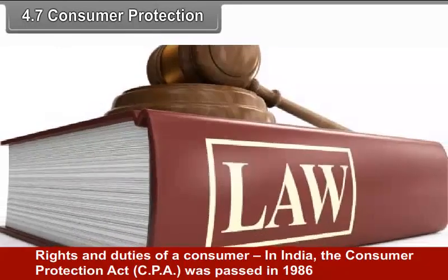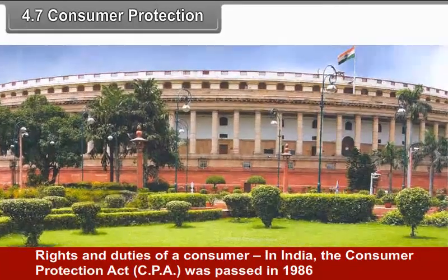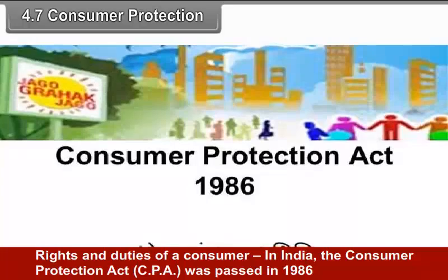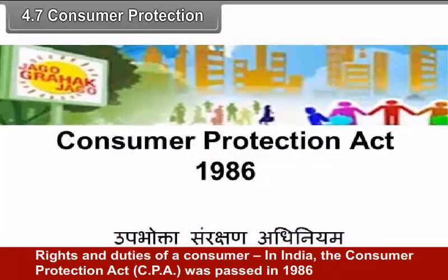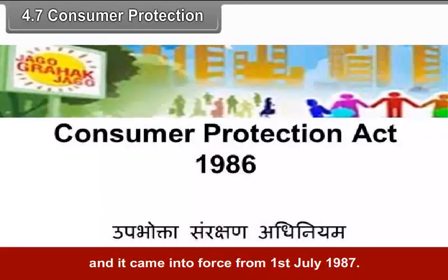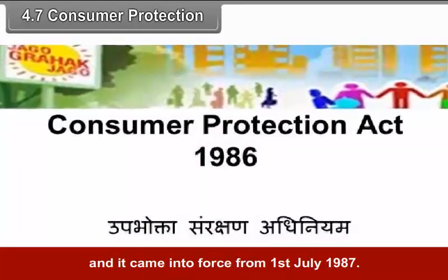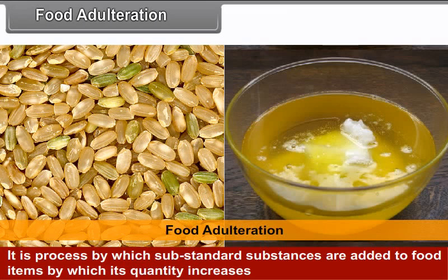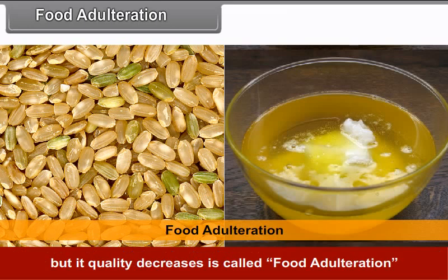Rights and duties of a consumer. In India, the Consumer Protection Act was passed in the year 1986 and it came into force from 1st July 1987. Food adulteration is a process by which substandard substances are added to food items, by which its quantity increases but its quality decreases.